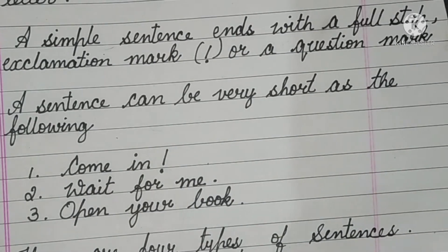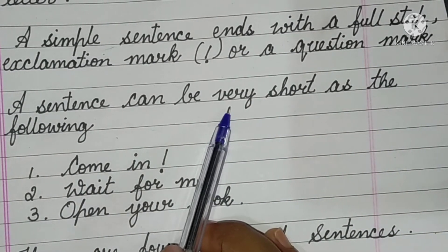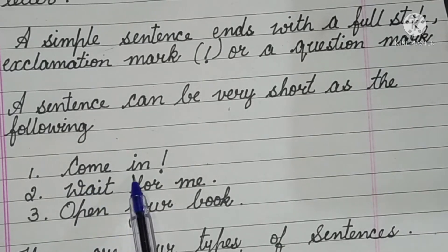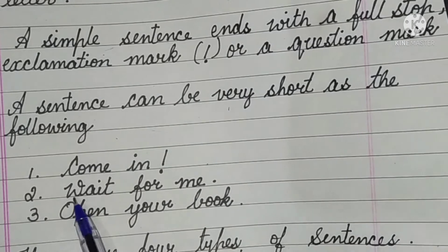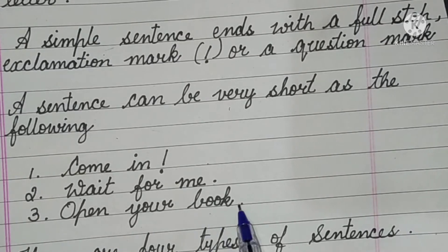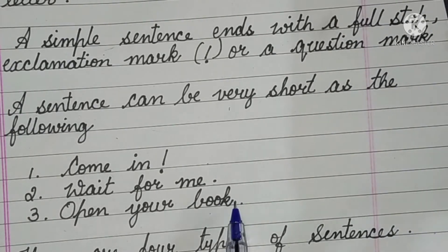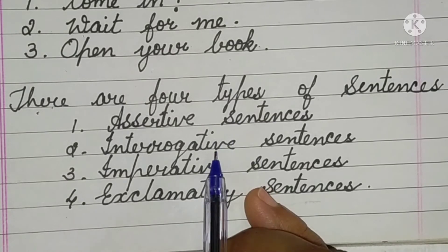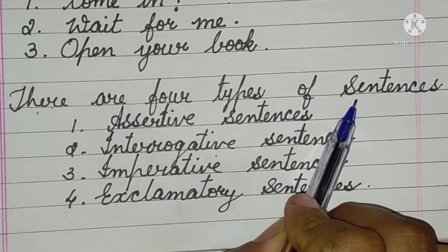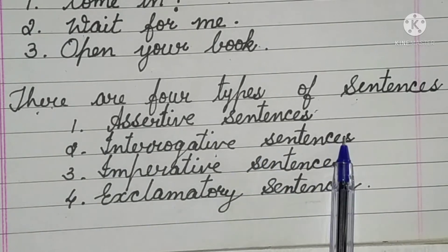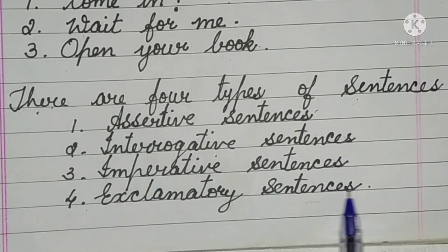A sentence can be very short or long. For example: 'Come in!' — exclamation mark; 'Wait for me.' — full stop; 'Open your book.' — full stop with capital first letter. There are four types of sentences: first, assertive sentences; second, interrogative sentences; third, imperative sentences; and fourth, exclamatory sentences.